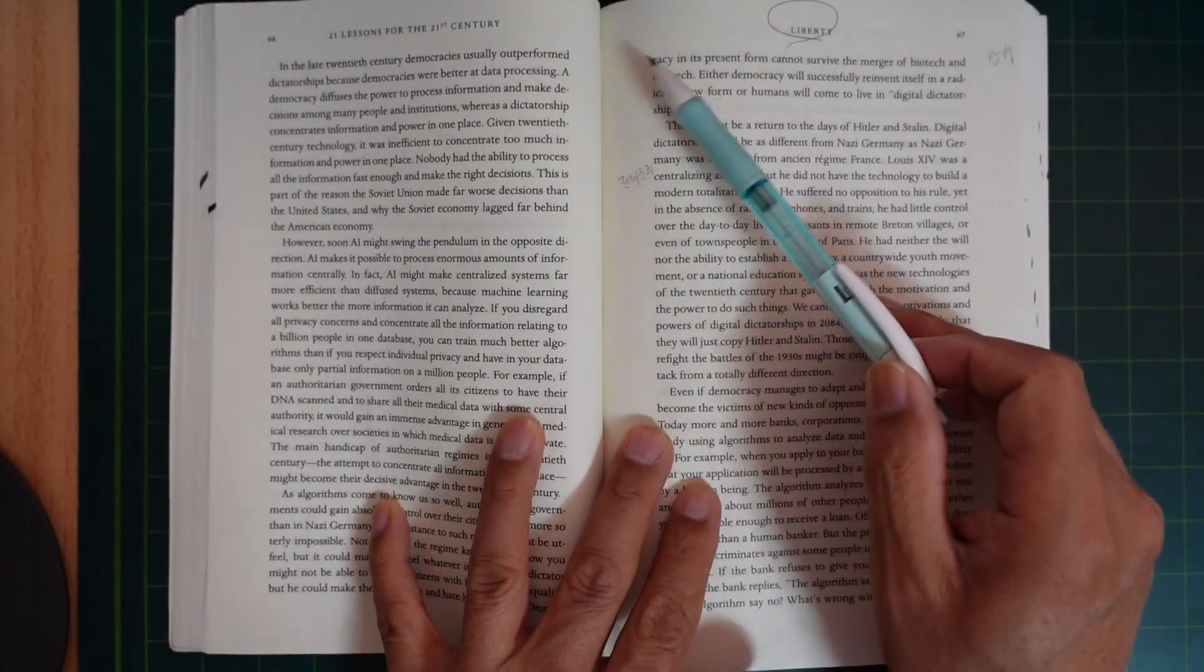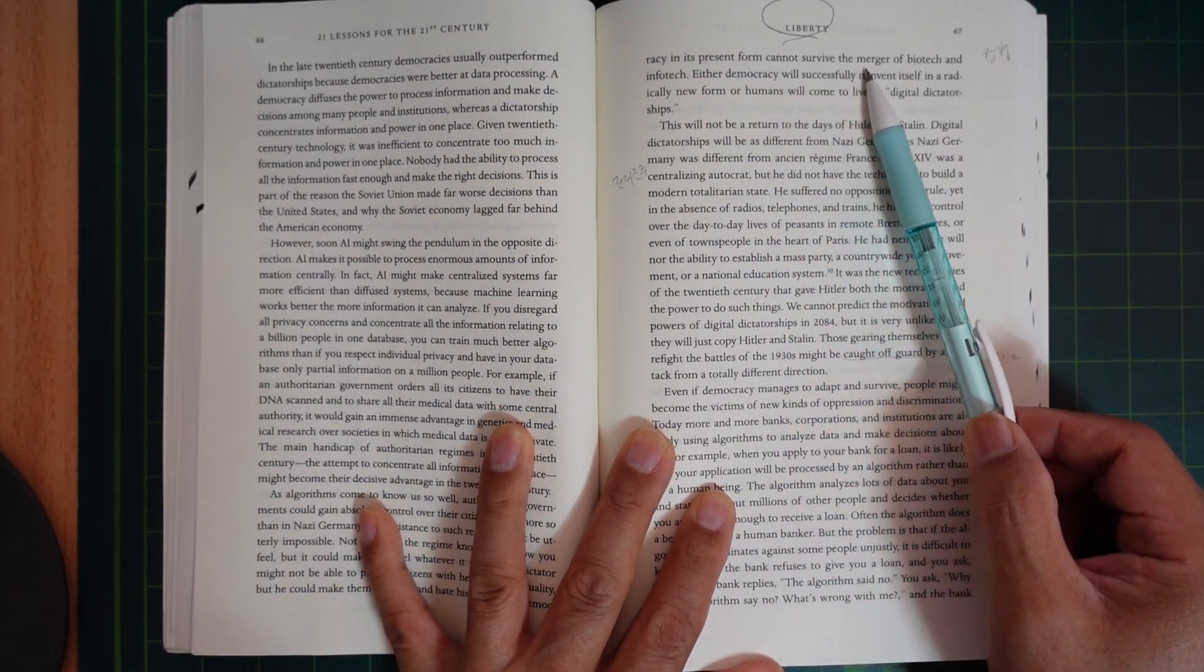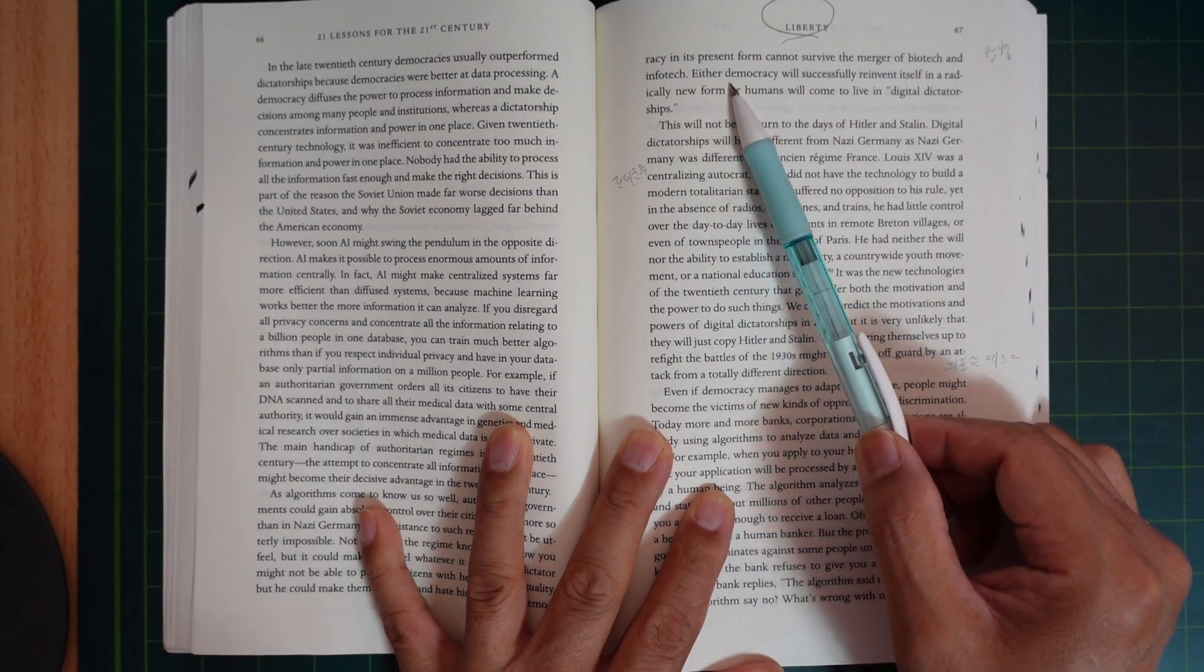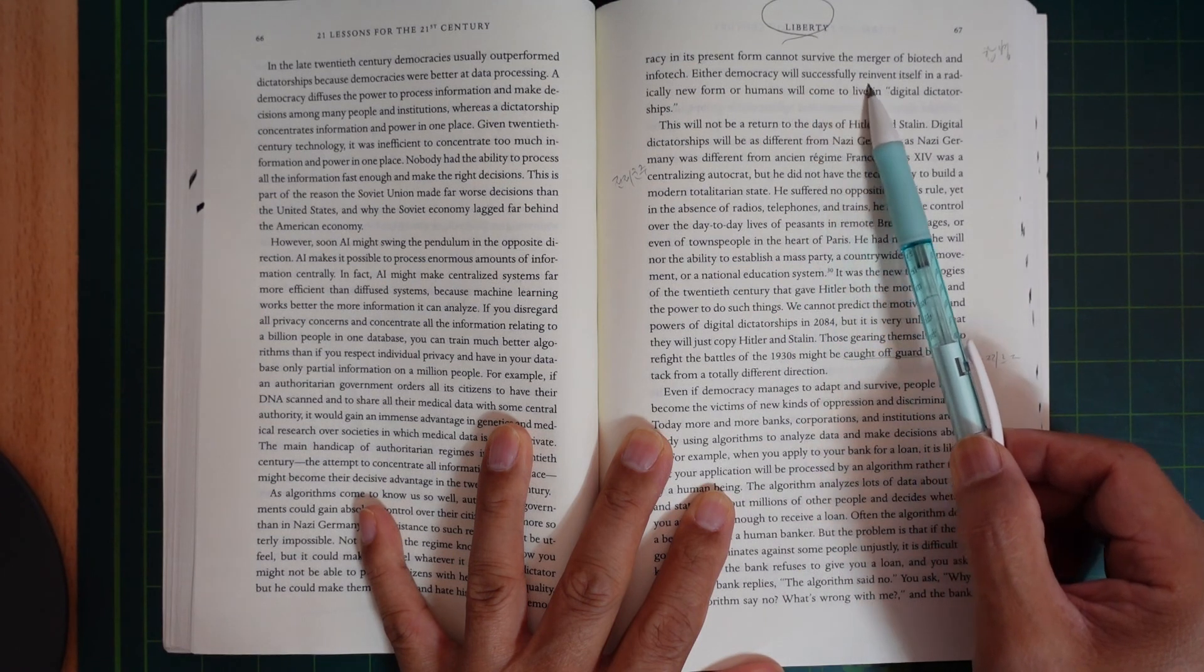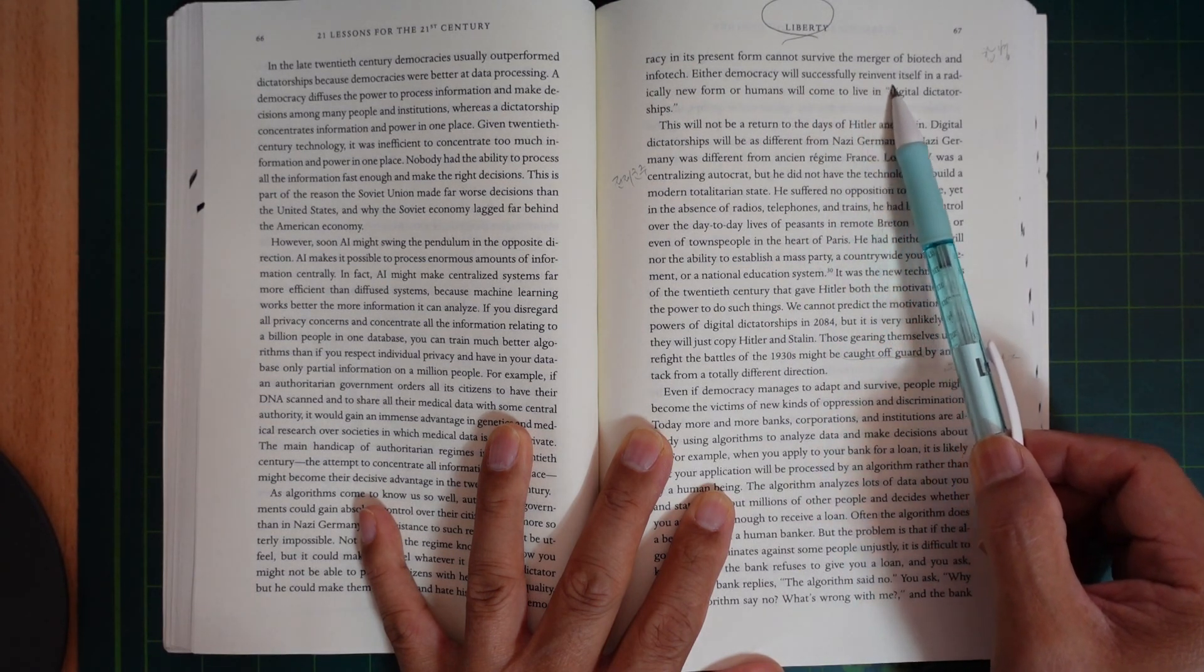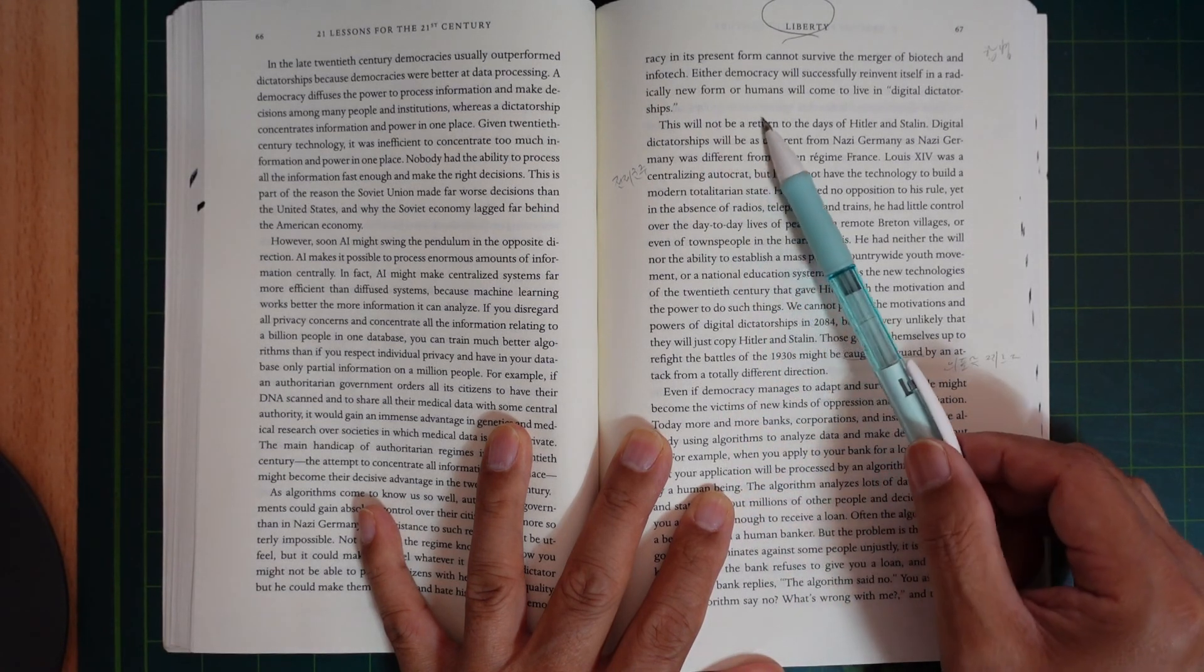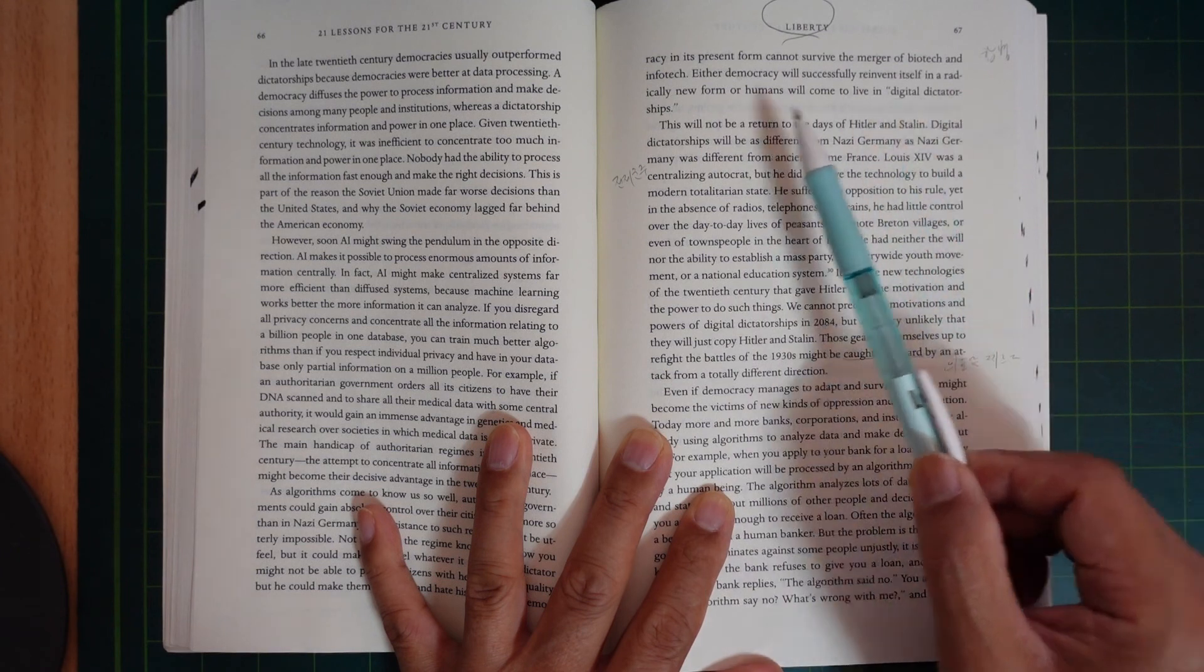Democracy in its present form cannot survive the merger of biotech and infotech. Either democracy will successfully reinvent itself in a radically new form, or humans will come to live in digital dictatorships.